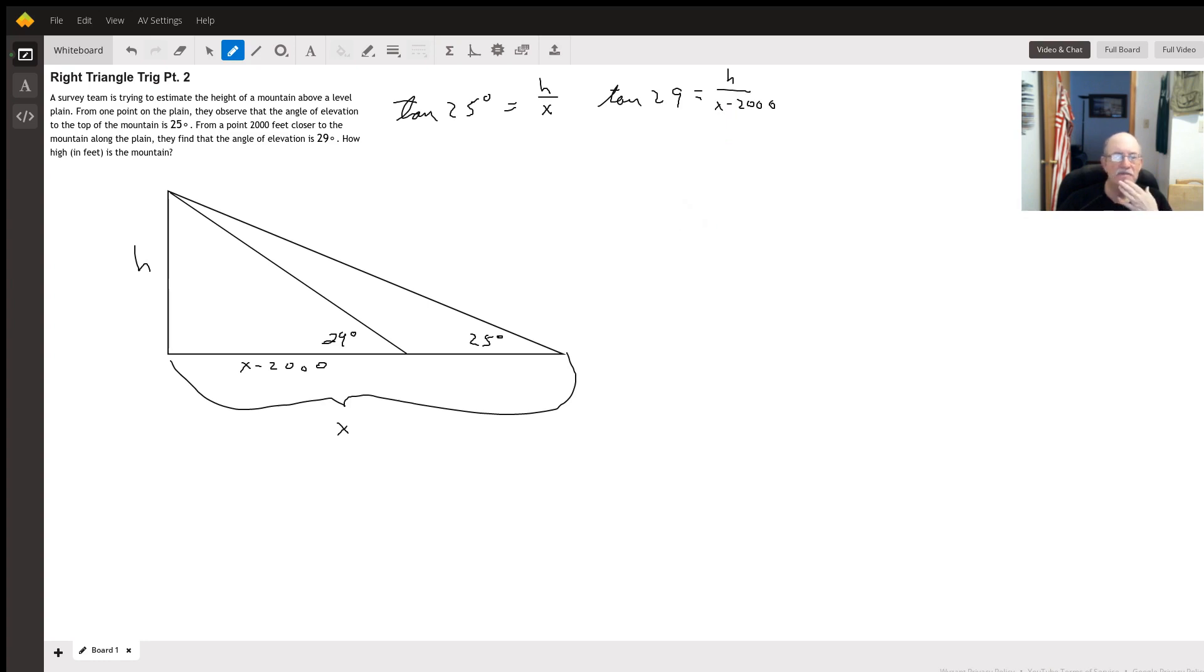So since we want to find h, let's solve these equations for x. For the first one, I'm going to multiply x times both sides. I get x times the tangent of 25 degrees has to equal h. And then I divide both sides by tangent of 25. I get x equals h divided by the tangent of 25.